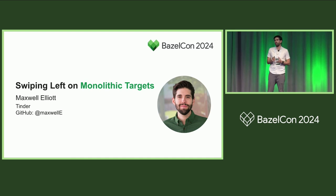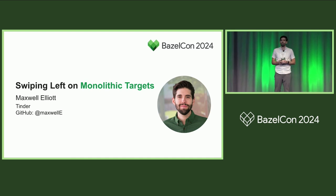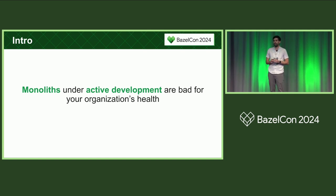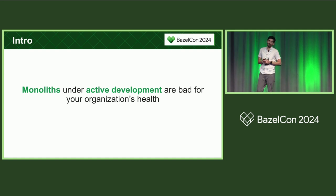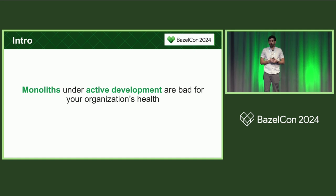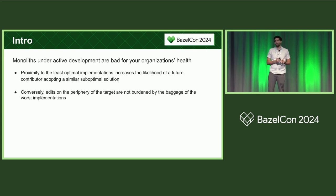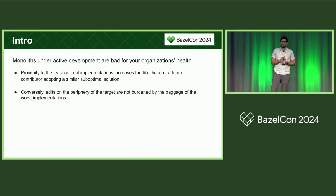Today, I want to talk to you about swiping left on monolithic targets and why you should be motivated to do so. Anyone that's worked in a codebase for an extended period of time has written code in a monolith. All software projects contain at least one monolithic target, and the existence alone of a monolith is not a reason to act on it. For example, monoliths that are rarely edited do not pose a large threat to your organization, yet monoliths that are under constant and active development are bad for your organization's health. Continuing exposure to least optimal implementations increases the likelihood of a contributor adopting similar suboptimal patterns. However, edits on the periphery of a target are not burdened by these unfortunate implementations.